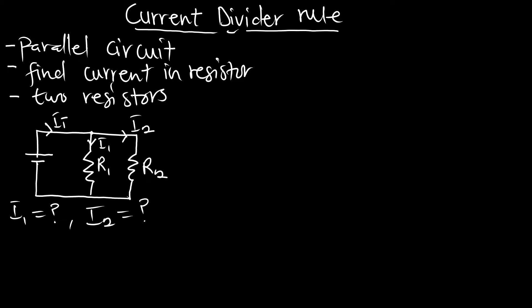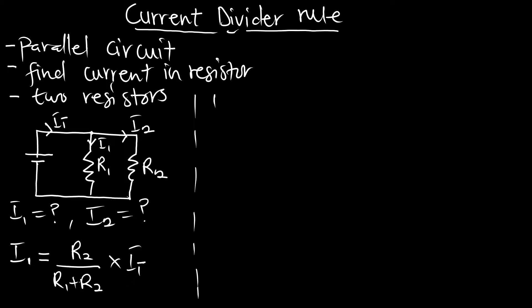Let's state the formula. If we have two resistors in a parallel circuit, the current i1 passing through resistor one is going to be R2 on R1 plus R2, multiplying It. And the current i2 passing through resistor two is going to be R1 on R1 plus R2, multiplying It. This is quite confusing - check this carefully.